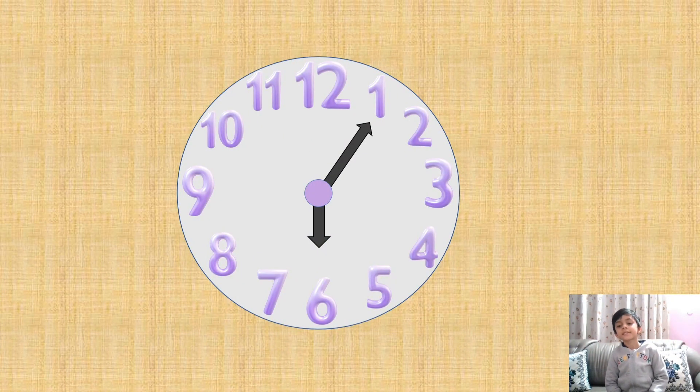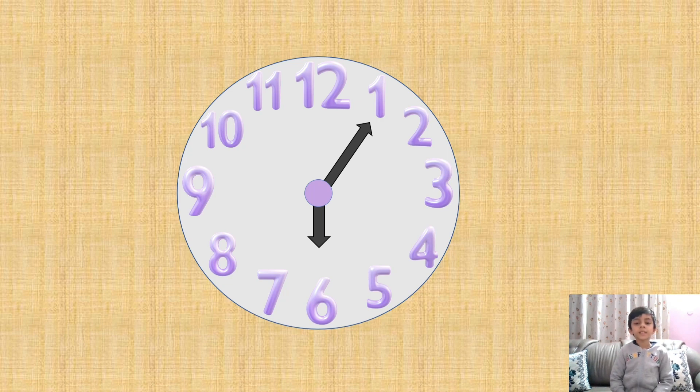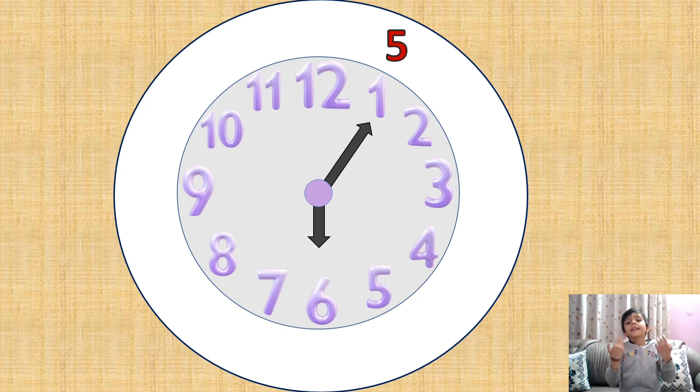Can you tell time in this clock? Do we say it is 6 hour and 1 minute? No, friends. We will say 6 hour and 5 minutes. Each increment is counted by 5. In 1, we say 5.